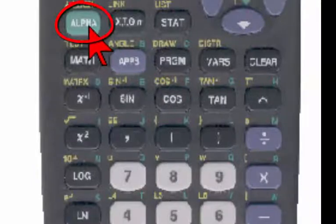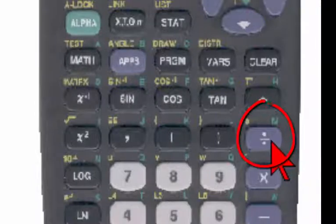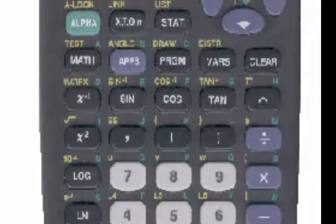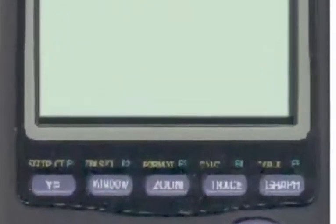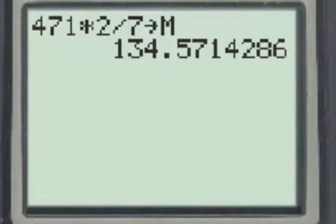The letter constants are in aqua color, so if I choose the alpha to choose the aqua color and then look to find the letter m, here I have the letter m. So now when I calculate 471 times 2 sevenths, it's going to store it in the calculator as the letter m. And here we have the mean.